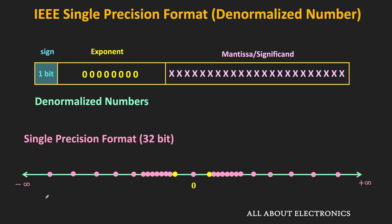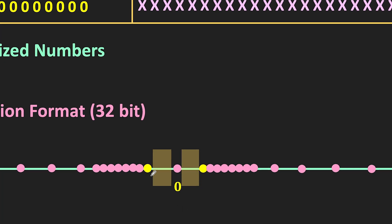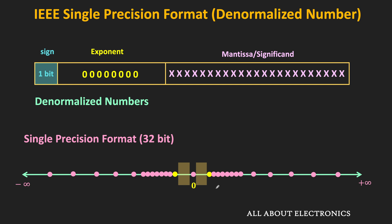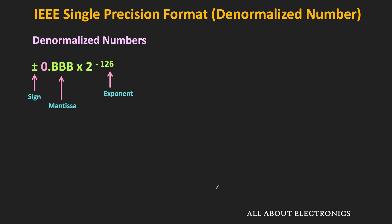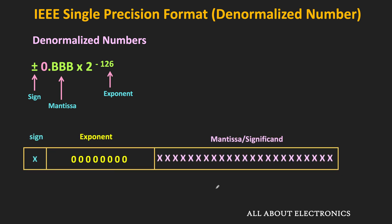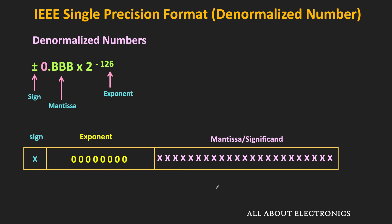In this IEEE 754 standard, denormalized numbers are a special type of floating point numbers used to represent very small values very close to 0. In fact, the values of denormalized numbers are even smaller than the smallest normalized number in the 32-bit format, covering the range between 0 and the smallest normalized numbers. The representation of denormalized numbers is different from normalized numbers: the digit before the binary point always remains 0. After the binary point, we have 23 bits of the mantissa field, and since the exponent is always 0, the exponential term always remains 2^-126. So in denormalized numbers, the exponent field is always 0 while the mantissa field is non-zero.